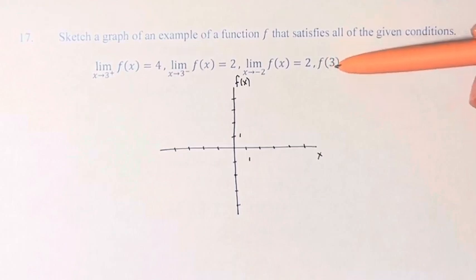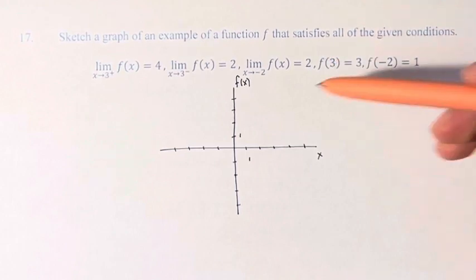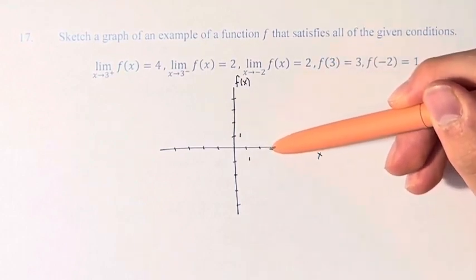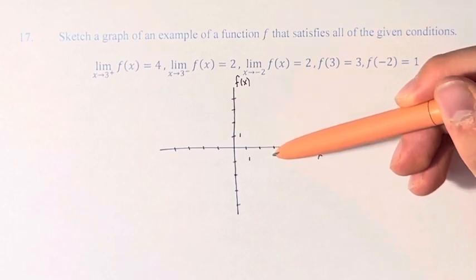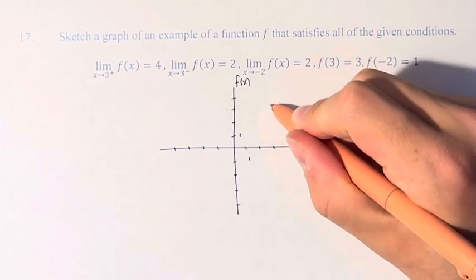The value of the function at 3, f of 3, is equal to 3. So if we go to x is equal to 3, the value of the function at this x value is equal to 3, so it has a y value of 3.